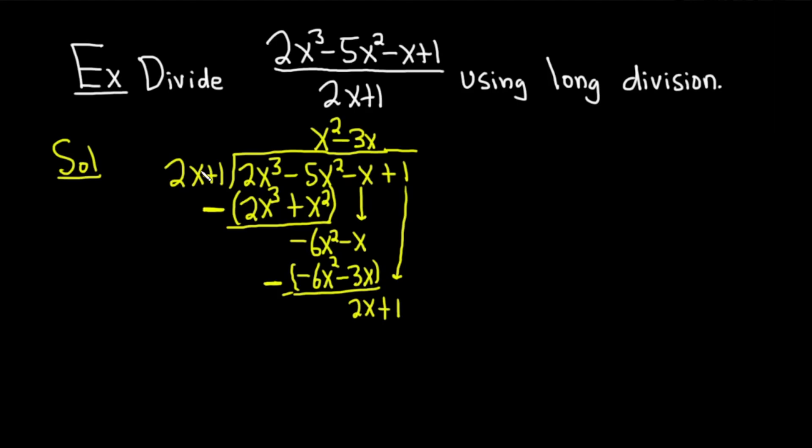And we do it again. What do we multiply by 2x to get 2x? 1. Then you multiply. 1 times 2x is 2x. 1 times 1 is 1. Look at that. We're going to get 0. It's really cool.